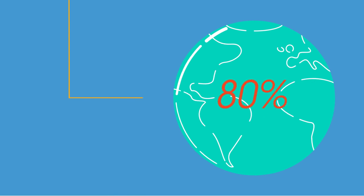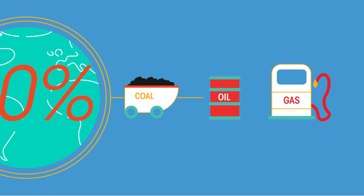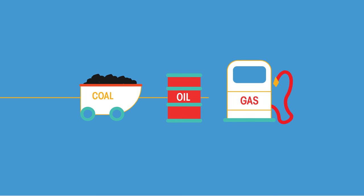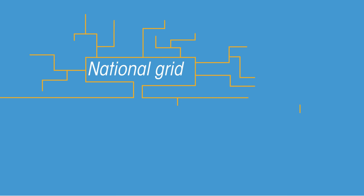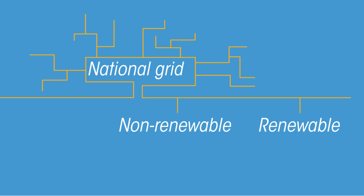Currently about 80% of the world's energy comes from fossil fuels. First we're going to have a look at burning fossil fuels in power stations to generate energy. And then we'll look at the national grid, which is relevant for both non-renewable and renewable energies.